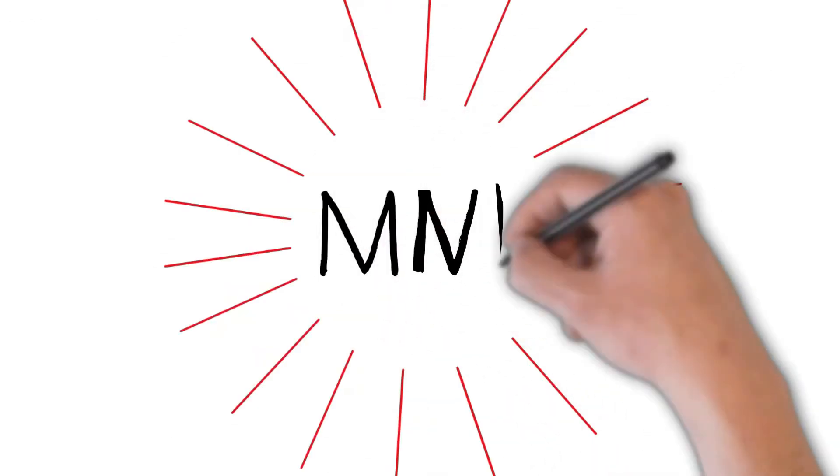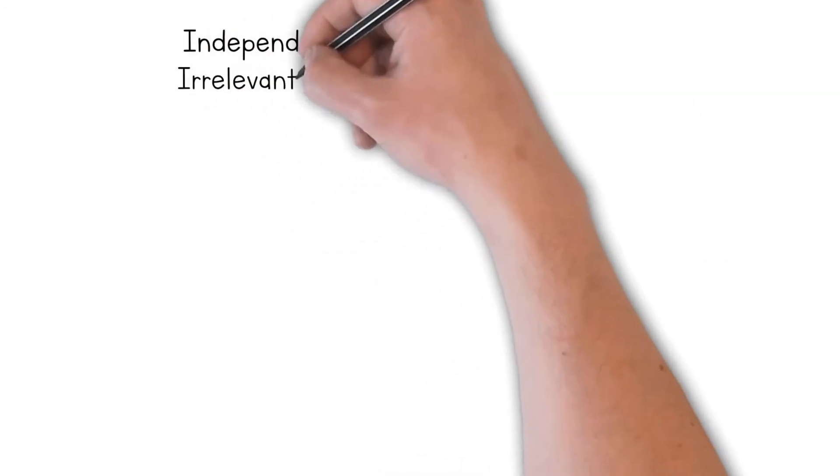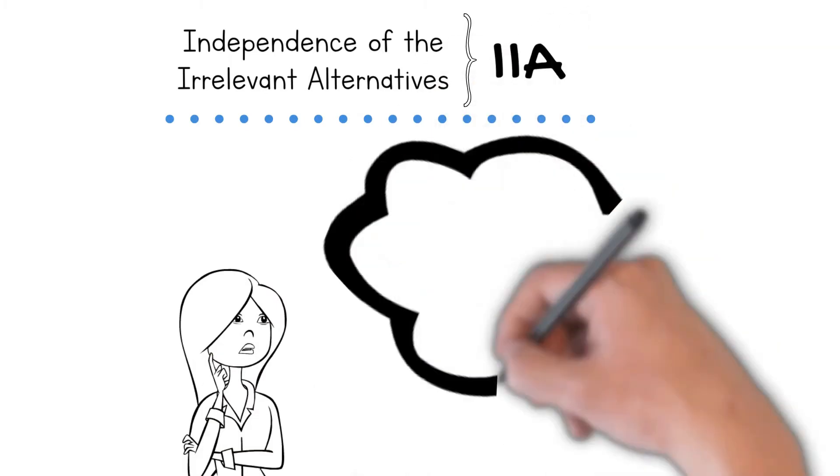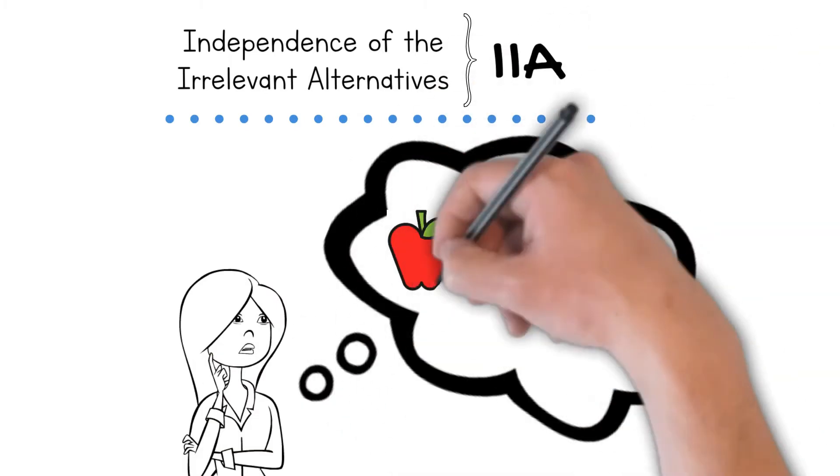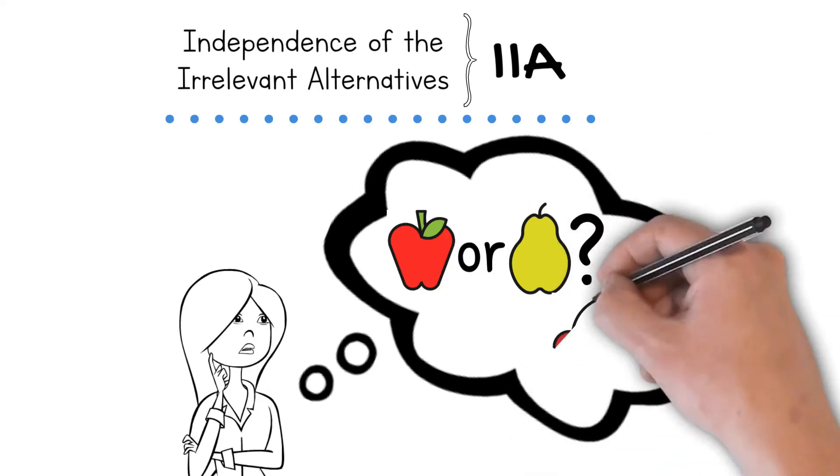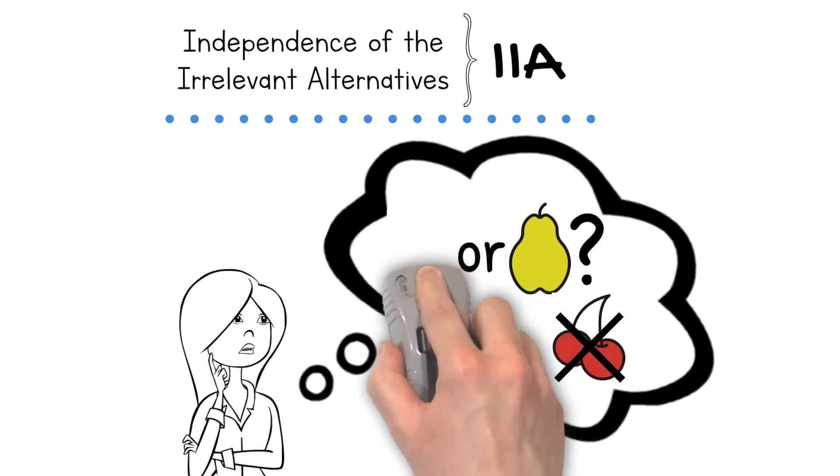The MNL has a distinguished property called the independence of the irrelevant alternatives (IIA), which establishes that if we compare two alternatives, the probability of choosing between these two is going to be independent of the attributes of others. In other words, the probability of the comparison will remain constant until one of the elements is modified.